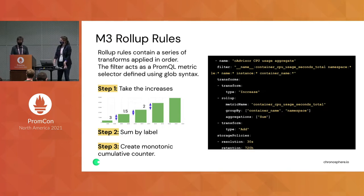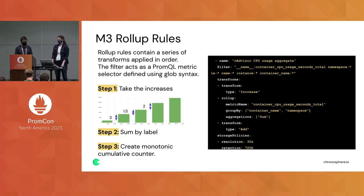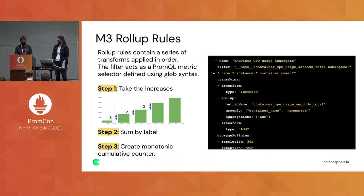The second step is to sum up the increases or deltas, creating a new rolled-up metric grouped by the labels in the group-by line — in this example, container name and namespace. The third and final step is to turn this metric into a monotonic cumulative counter, which is then sent and persisted to your time series database or remote storage. Storage policies in the configuration dictate the resolution and retention periods.